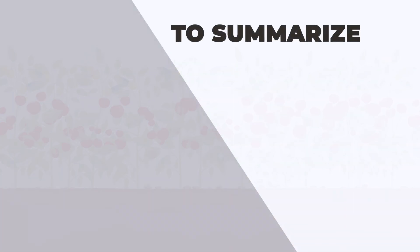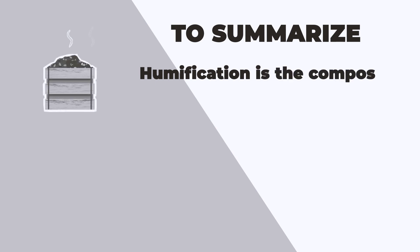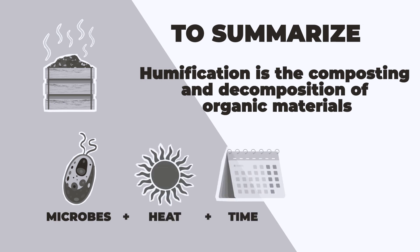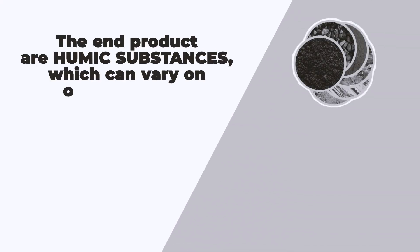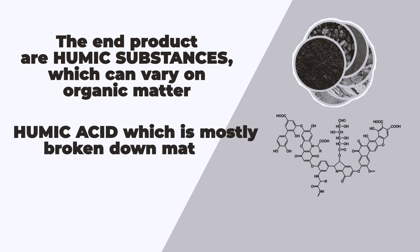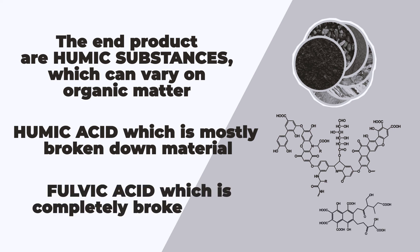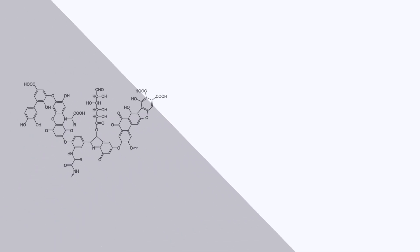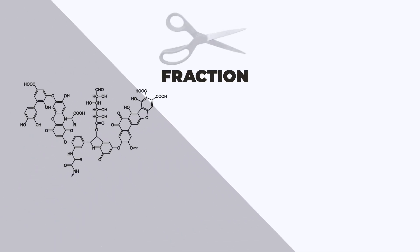To summarize, humification is the composting and decomposition of organic materials by microbes, heat, and time. The end products are humic substances, which can vary in their molecular composition, but are broadly considered humic acid — which is mostly broken-down material — and fulvic acid, which is completely broken down until it is stable. Fulvic acid is considered a fraction of the humic acid.